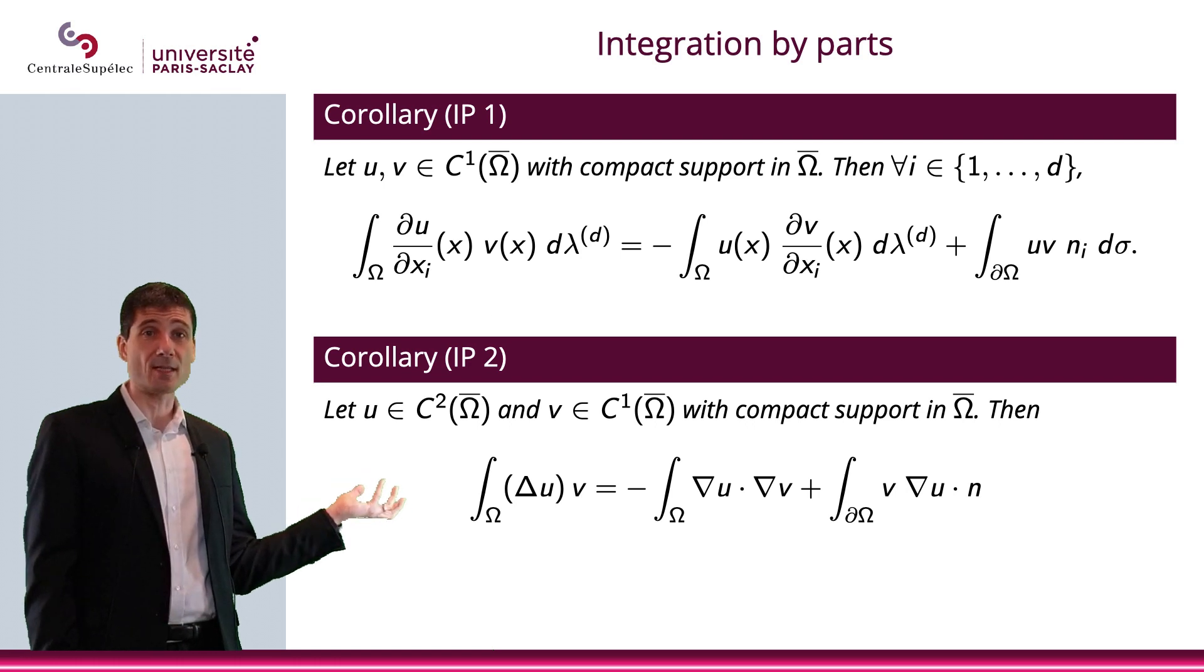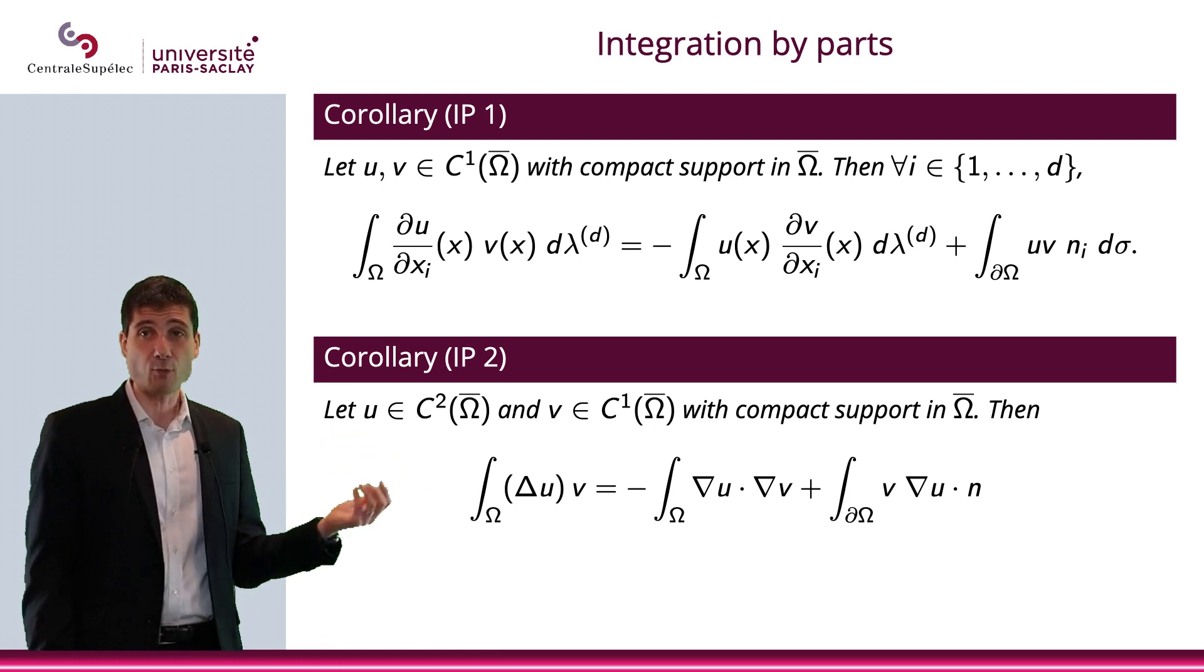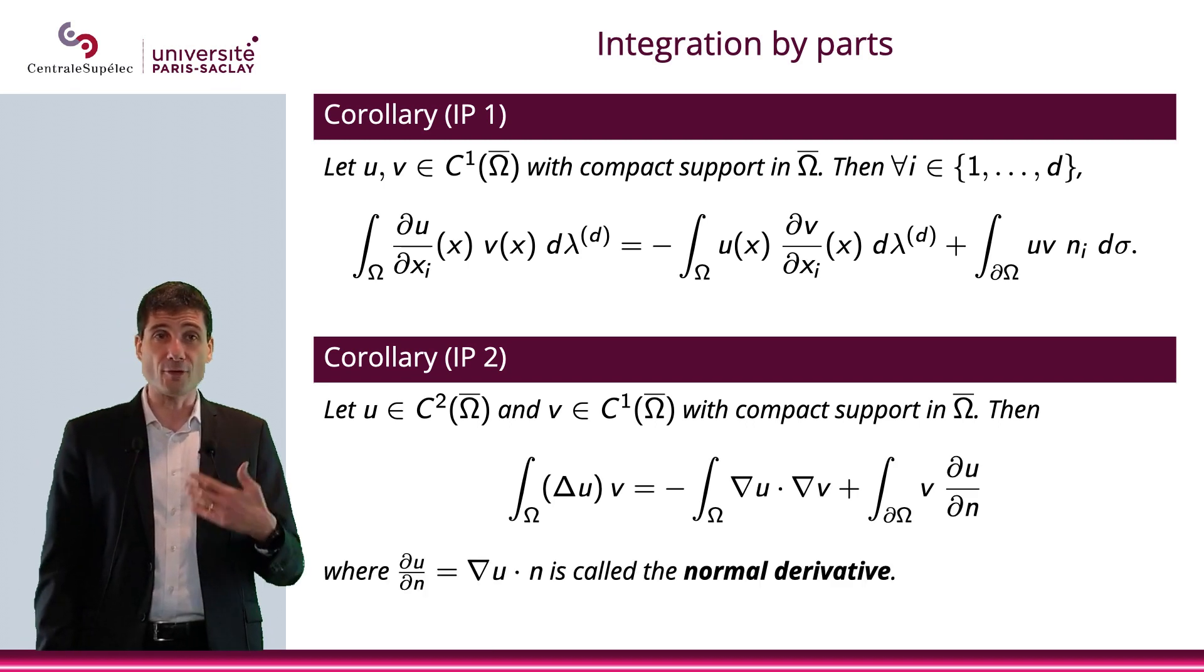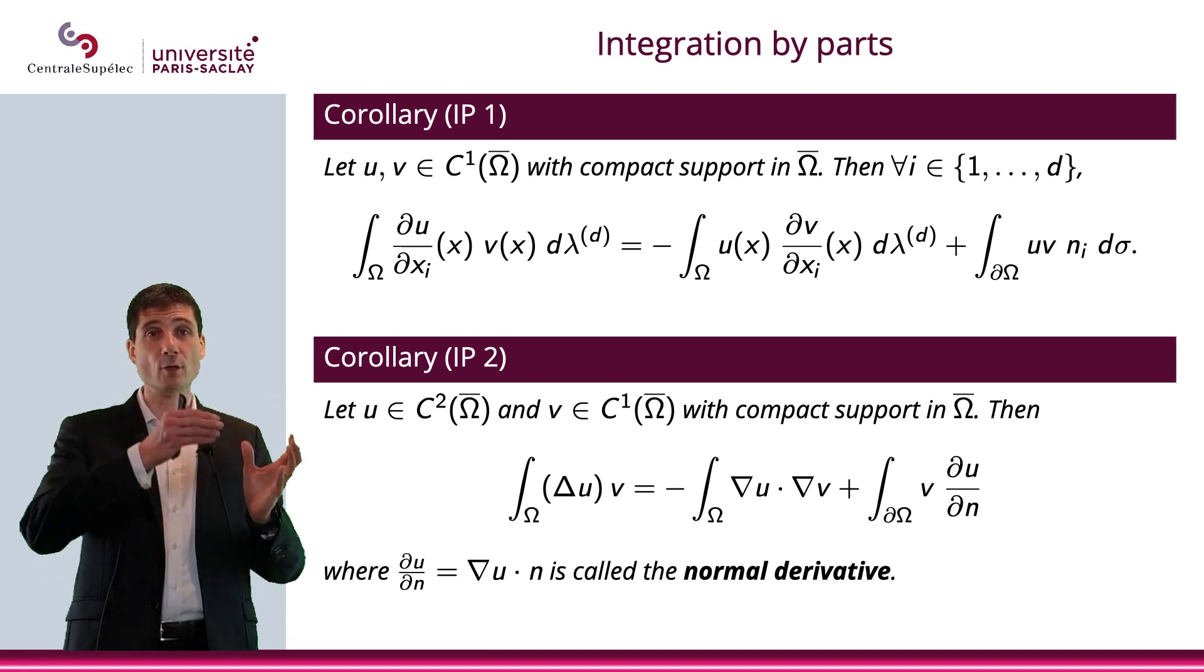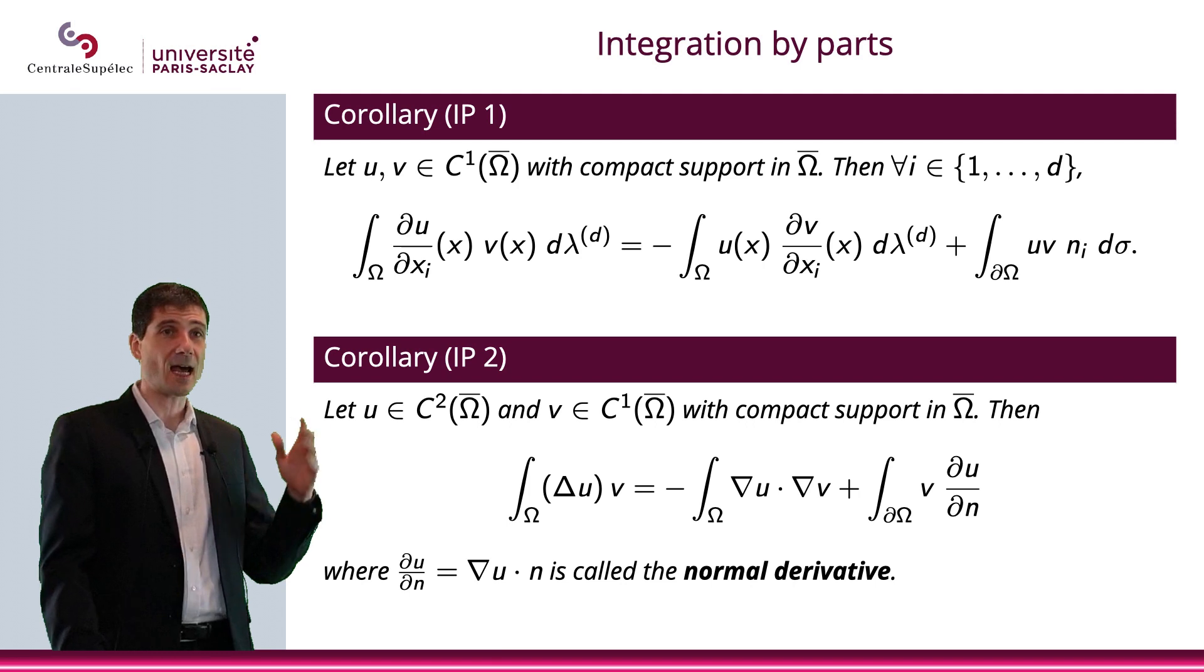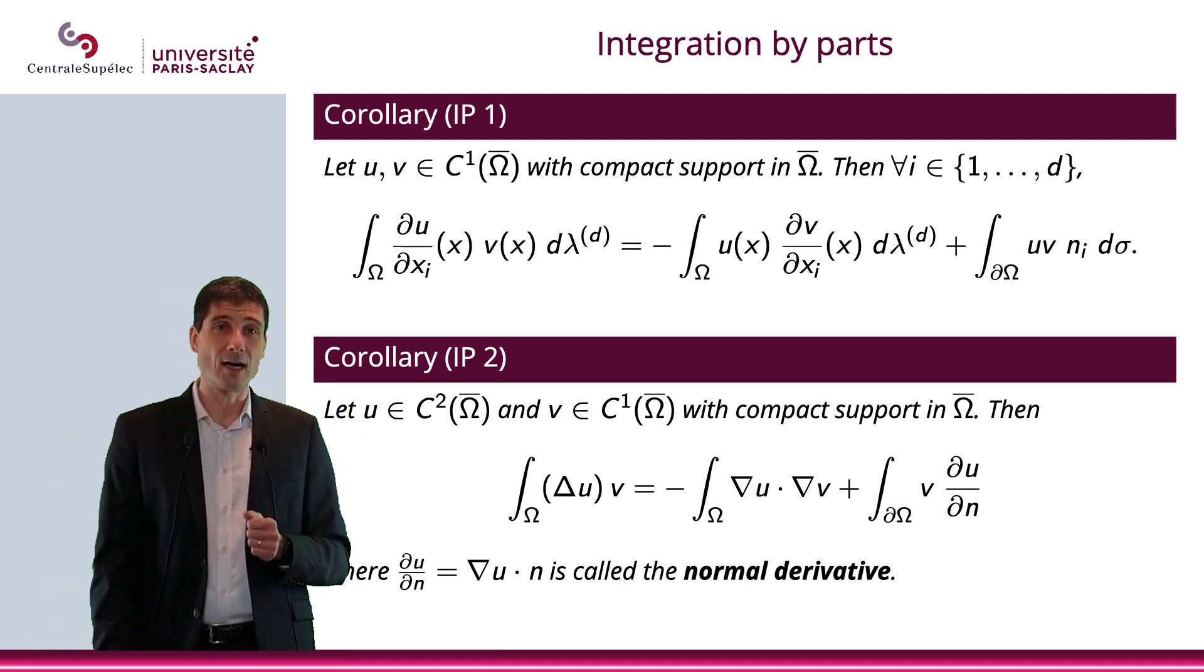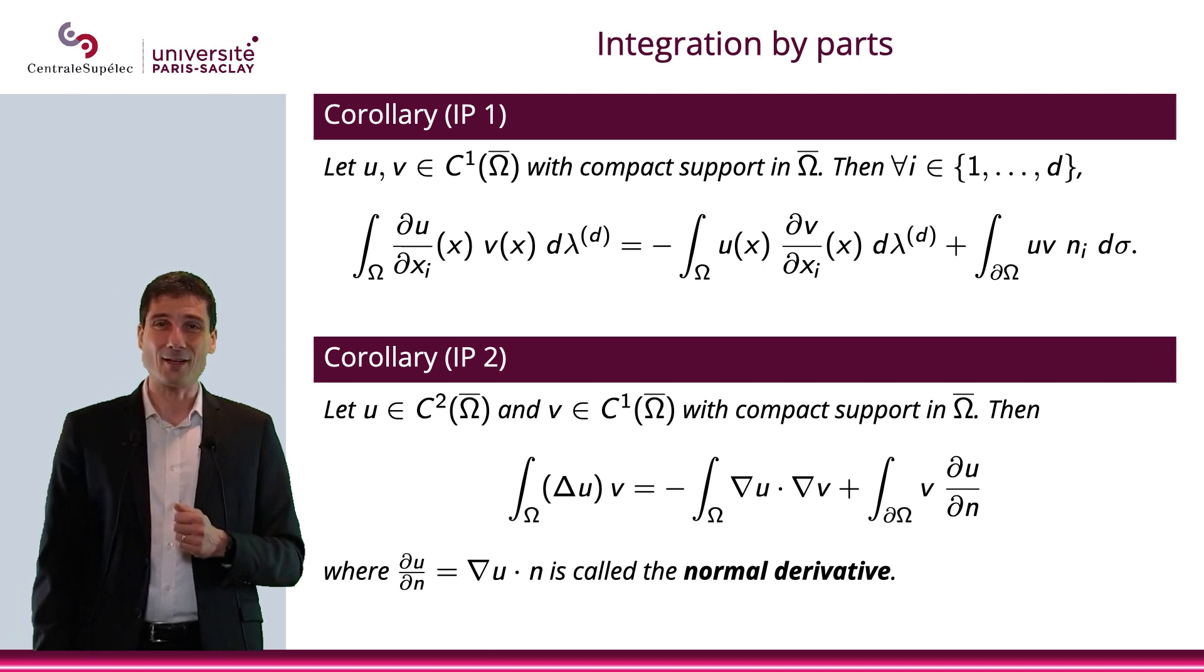Now what you can see is this gradient u, ∇u, the scalar with n, that will be given a name, and that will be called the normal derivative. So, ∂u/∂n, called the normal derivative, is gradient ∇u, if you prefer, scalar product n. So, here is IP1, here is IP2, and that is our definition of the integration by parts in higher dimensions.